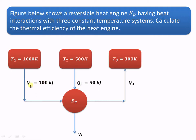The heat supply Q1 from the first source is 100 kJ. The heat supply Q2 is 50 kJ from the 500 Kelvin source, and Q3 is the heat rejected. W is the work obtained from the reversible heat engine. Now let us see how to find out the efficiency of this reversible heat engine.